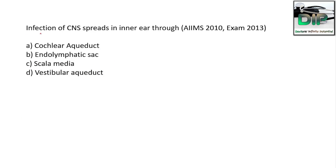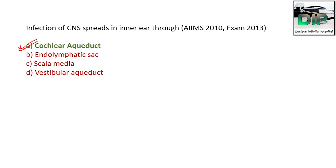Final question: Infection of the CNS spreads to the inner ear through — Option A: Cochlear aqueduct, Option B: Endolymphatic sac, Option C: Scala media, Option D: Vestibular aqueduct. This is essentially the same concept — the answer is cochlear aqueduct.